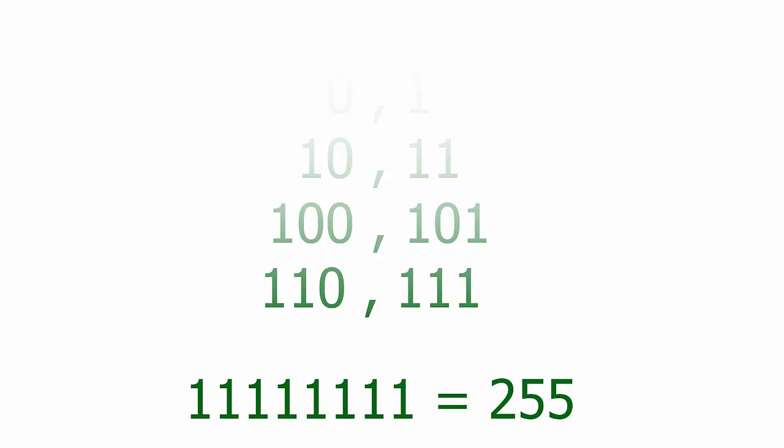We can still do base to the power of our places to see what our max numbers are. So 2 to the first gives 2 possible values: 0 and 1. 2 to the second is 4 possible numbers. 2 to the third is 8 possible numbers. Since we start at 0, our max value for 2 to the third is 7 — or 0 through 7. Pretty simple and straightforward.